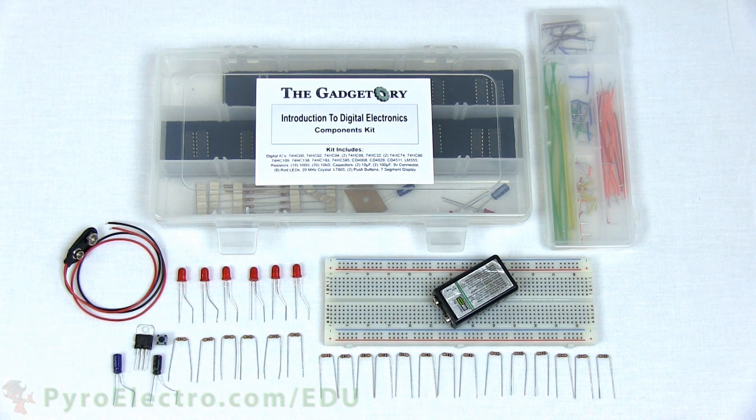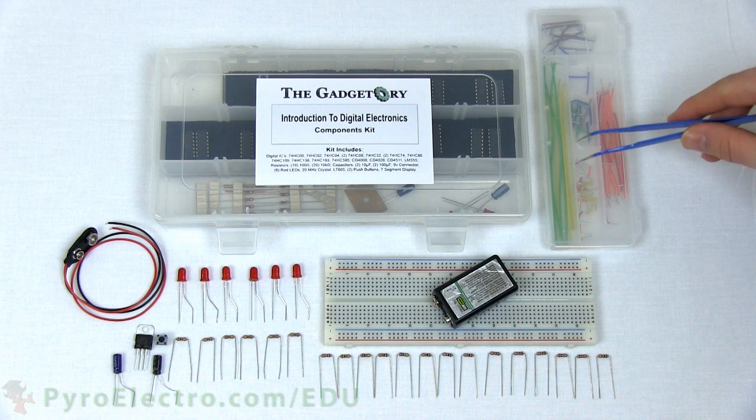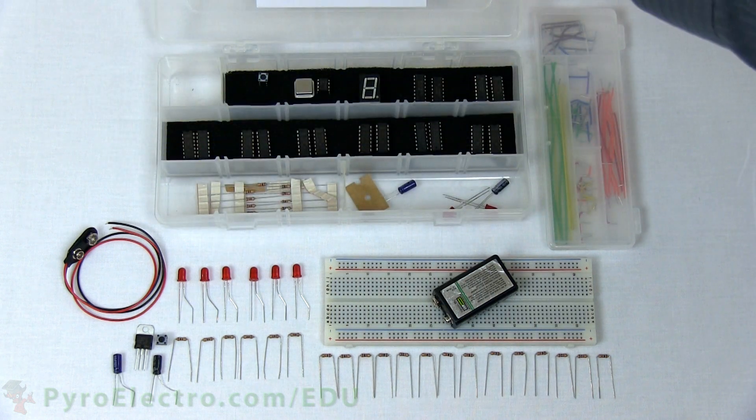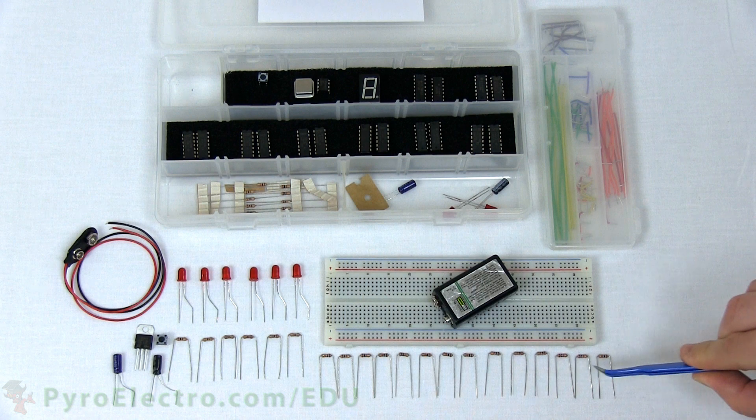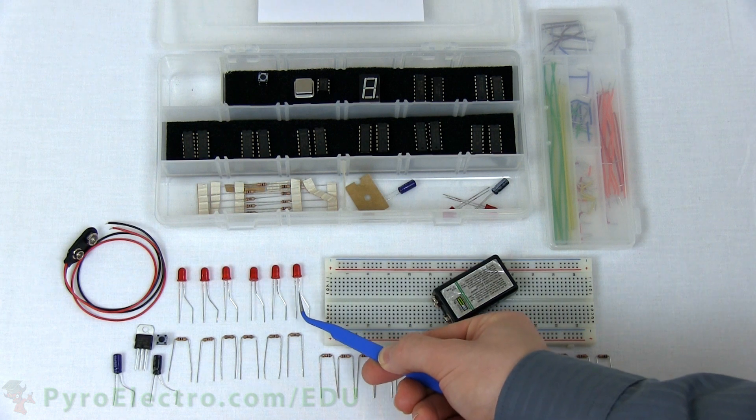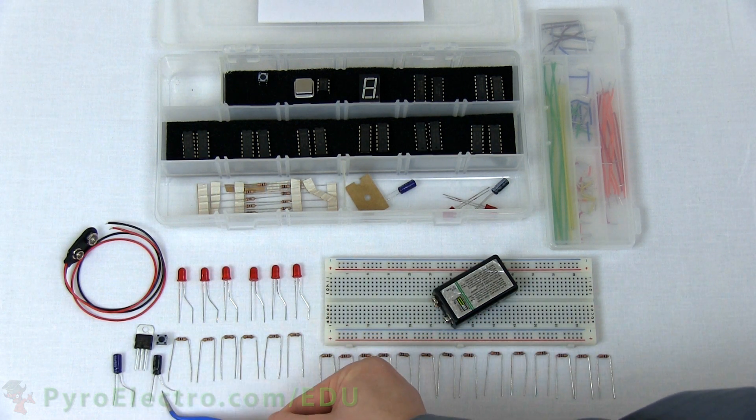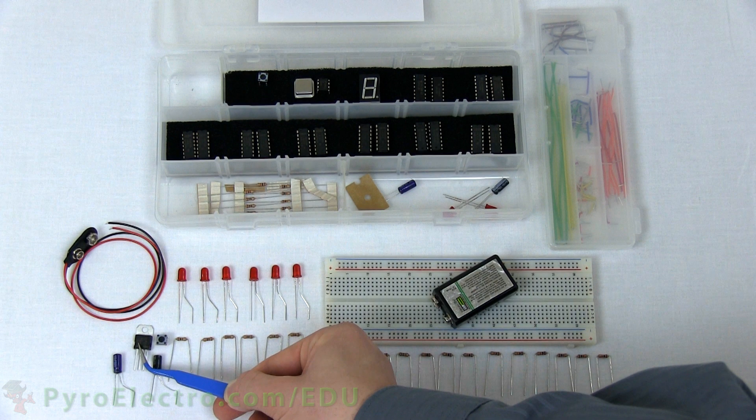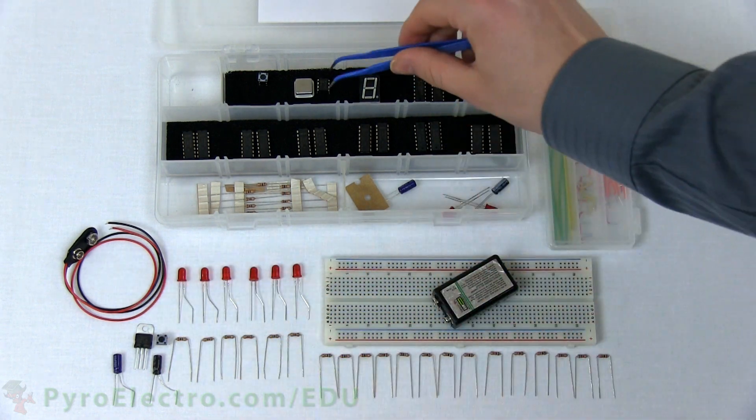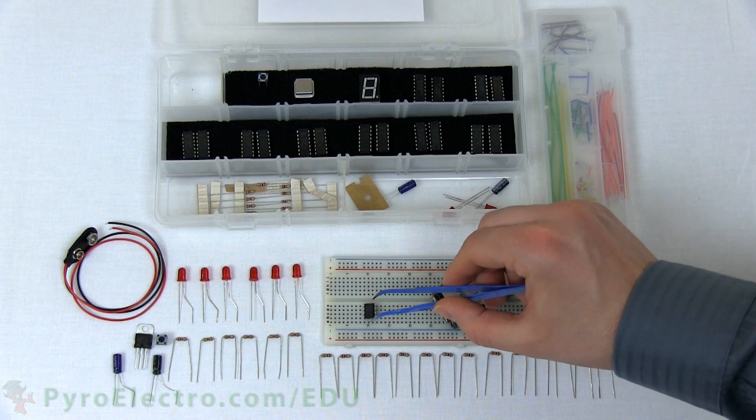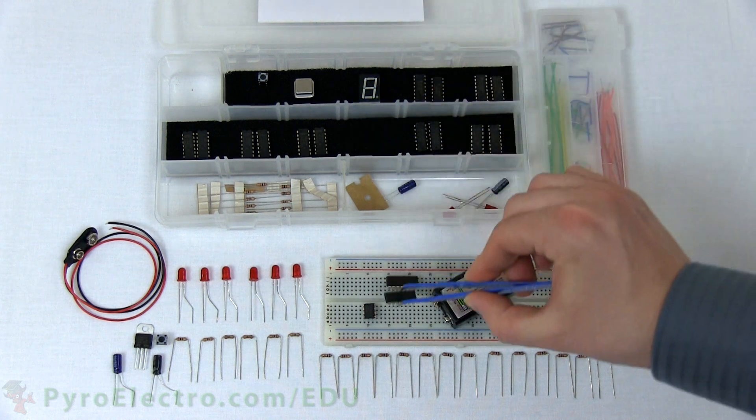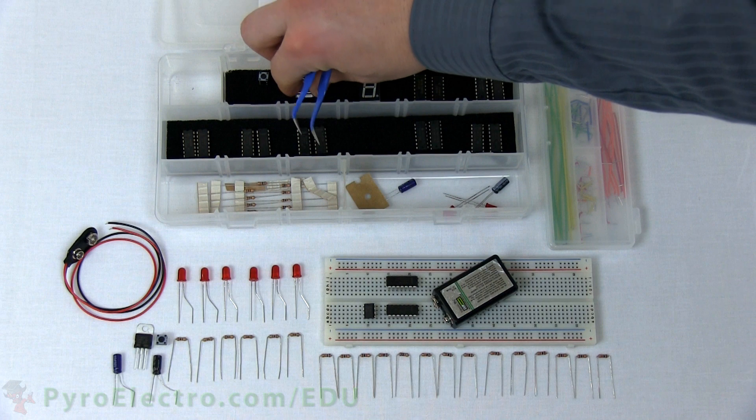The parts we'll need to build this 4-bit shift register are the jumper wire kit, a breadboard, a 9-volt battery, and from the components kit: 14 10-kilohm resistors, 6 100-ohm resistors, 6 red LEDs, a 10 and 100 microfarad capacitor, a 7805 5-volt regulator, a push button, a 9-volt battery connector, a 555 timer, 2 7474 D flip-flop ICs, and the crystal oscillator if you're curious how the system reacts to a super fast clock input.